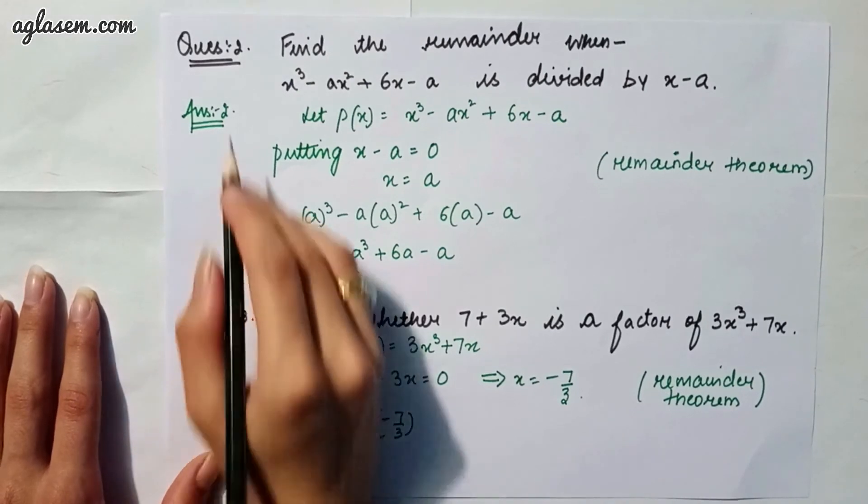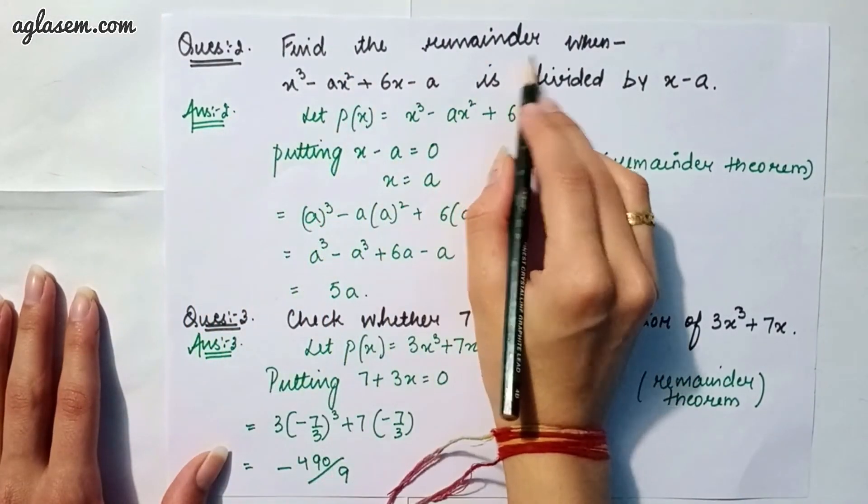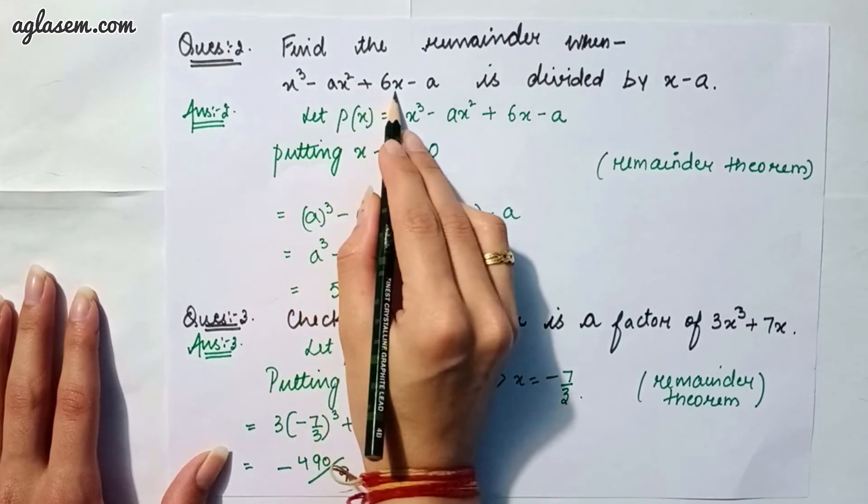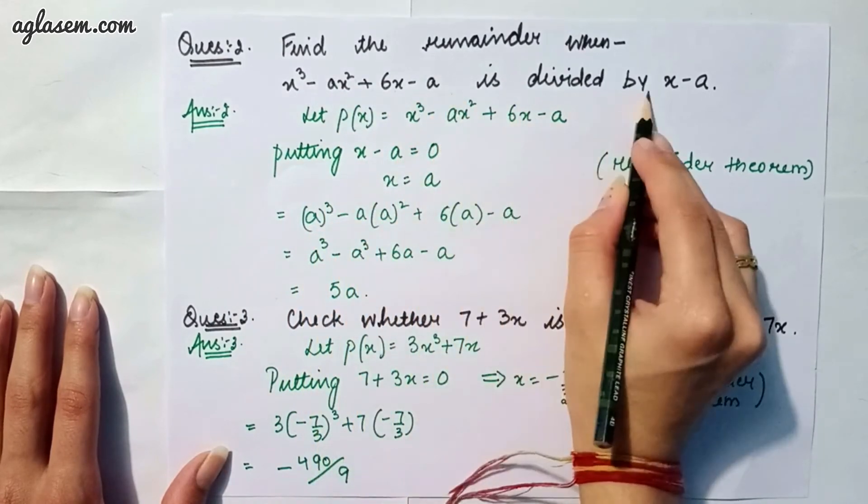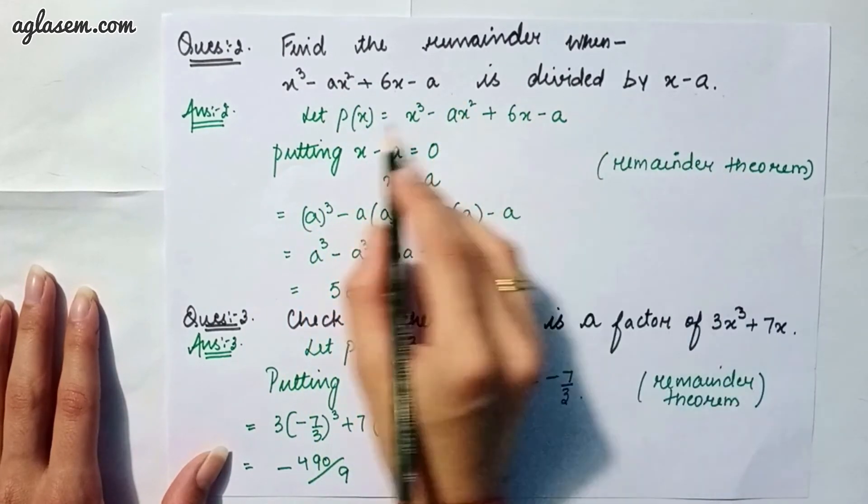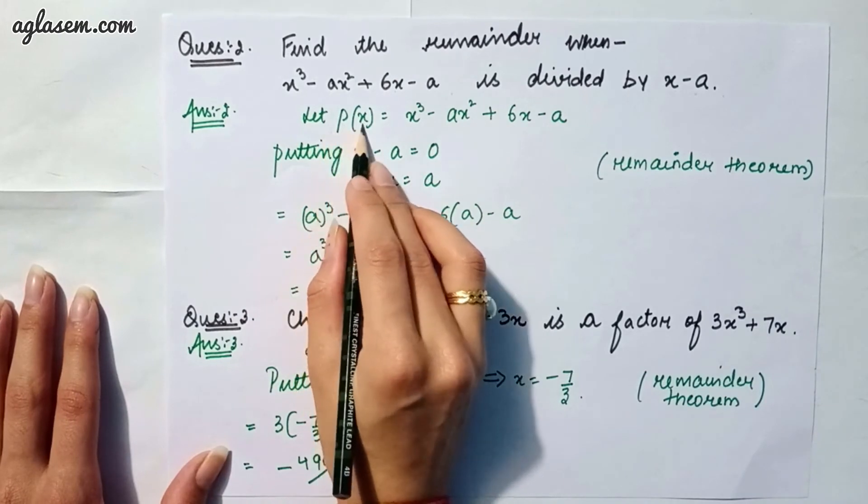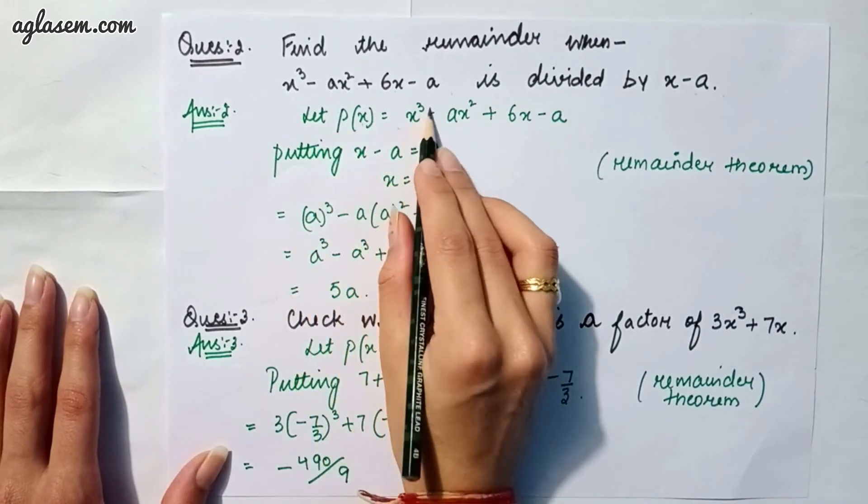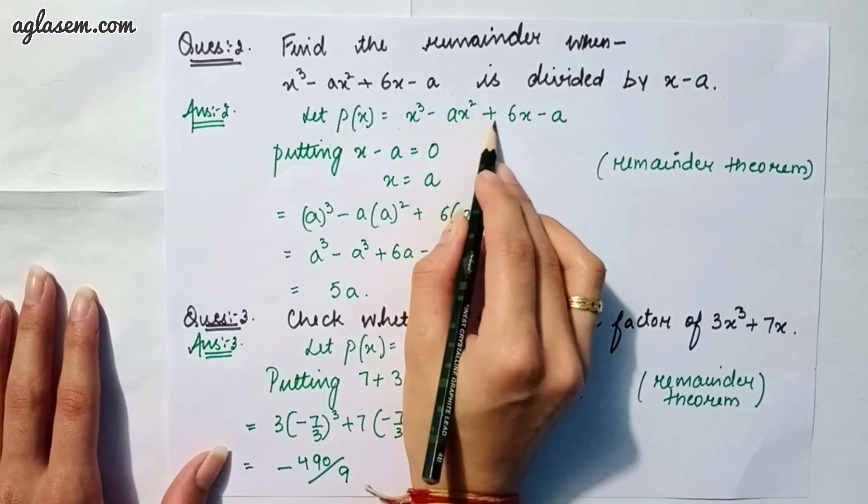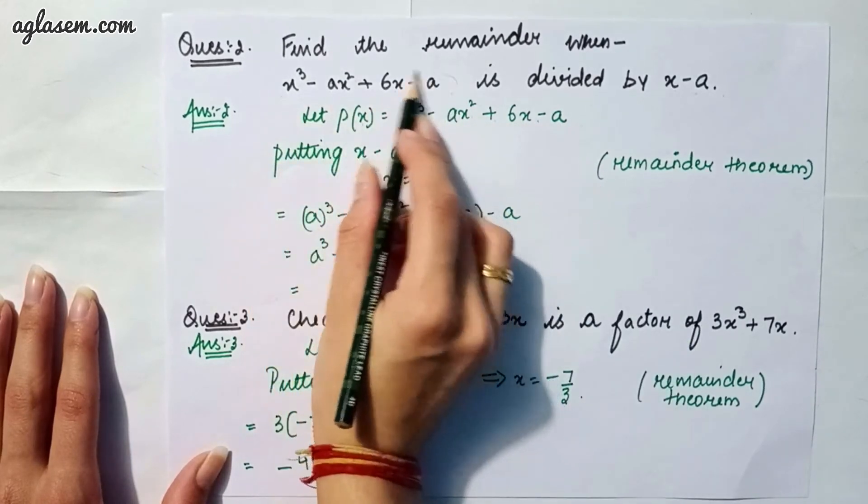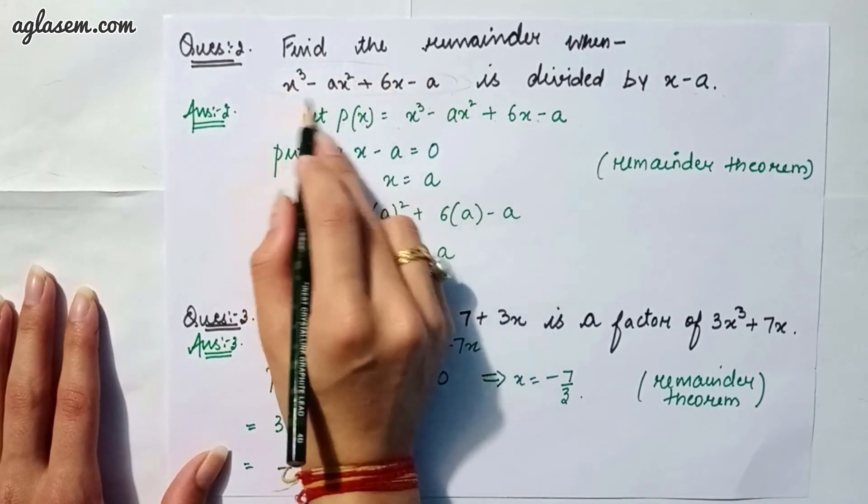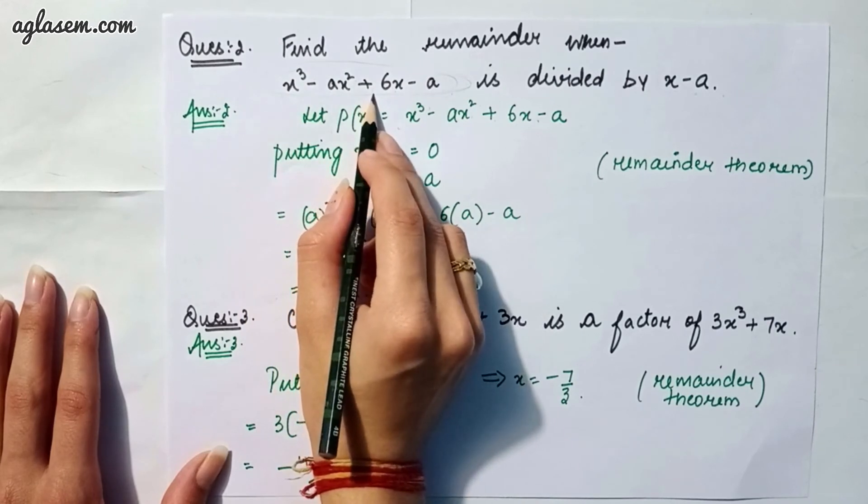Moving to our second question which says, find the remainder when x³ - ax² + 6x - a is divided by x - a. So, first of all, we have to let p(x) = x³ - ax² + 6x - a.